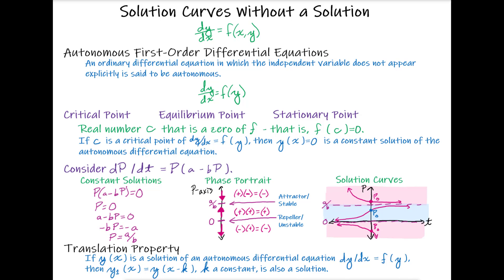If we had a case where, coming from above or below, the arrow was going towards the constant solution on one side and going away from it on the other side — so the arrows are going both to and away depending on whether you look above or below — this is called a semi-stable constant solution.